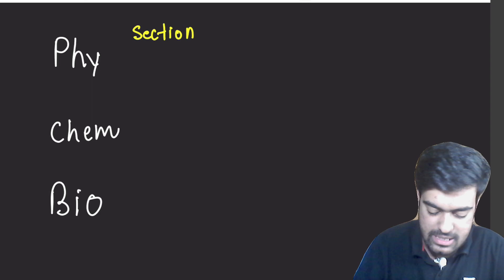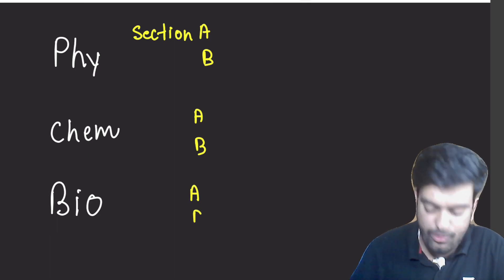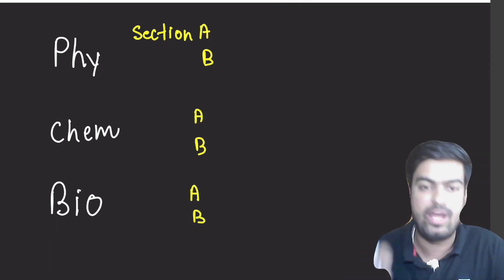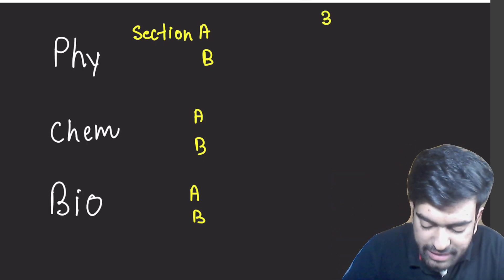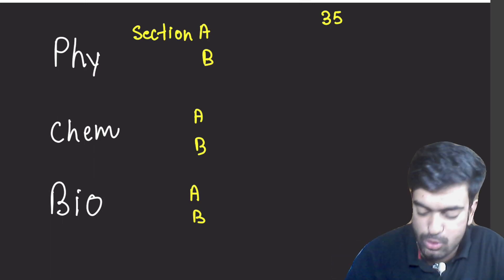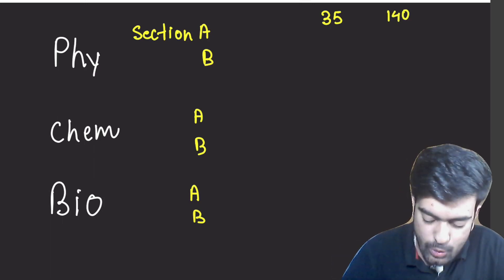Each subject is divided into two parts. Let's say Section A and then we have Section B. For Physics, in Section A, how many questions are we going to have? So Section A is going to have 35 questions which is going to give you 140 marks.